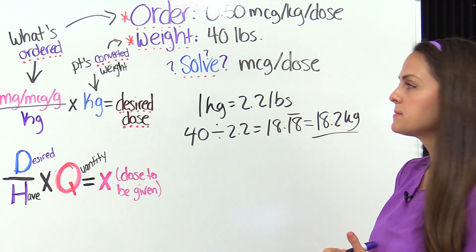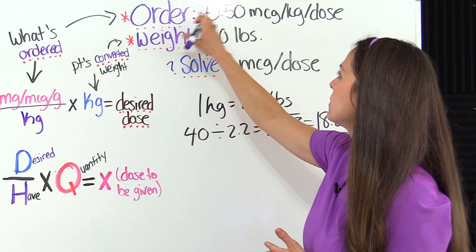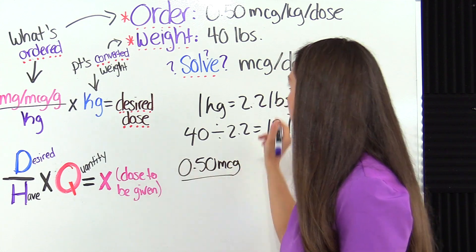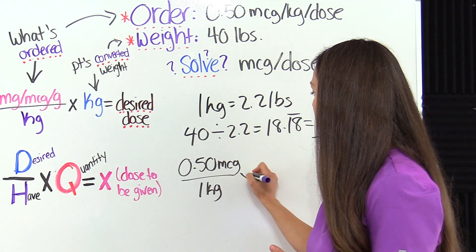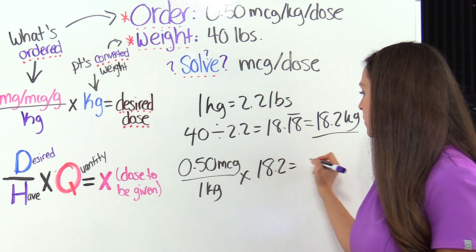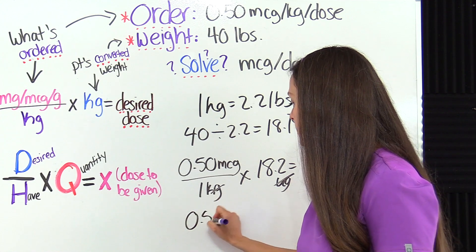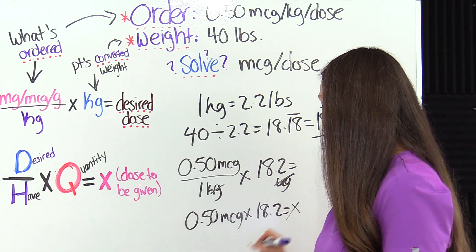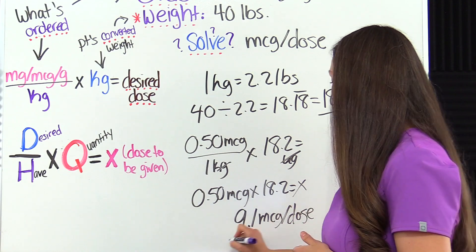So that is how much our patient weighs. Now we plug into the formula to figure out the desired dose. The physician ordered 0.50 micrograms over one kilogram, because for every kilogram the patient weighs they need 0.50 micrograms. We multiply that by 18.2 kilograms. Kilograms cancels out. So 0.50 divided by one is 0.50, times 18.2 gives us 9.1 micrograms — that is how much they need per dose.